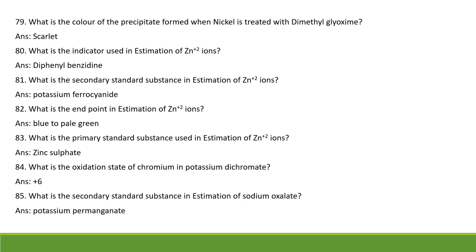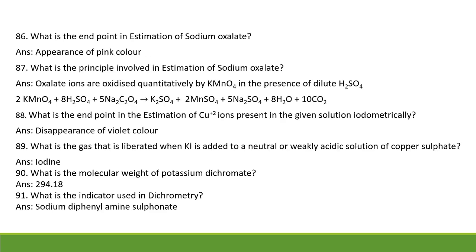What is the primary standard substance used in estimation of Zn²⁺ ions? Zinc sulfate. The oxidation state of chromium in K2Cr2O7 is +6. What is the secondary standard substance in permanganometry? KMnO4, potassium permanganate. What is the end point in permanganometry? Appearance of pink color. What is the end point in estimation of Cu²⁺ ions? Disappearance of violet color. When KI is added to a solution of copper sulfate, iodine gas is liberated. The indicator used in dichromatic titrations is sodium diphenylamine sulfonate.